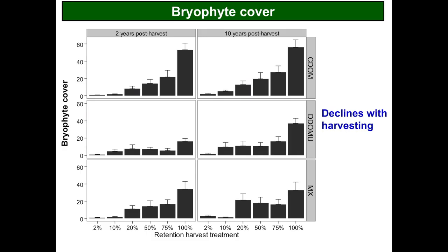Looking at the other three forest types — excluding the deciduous dominated — at two years and ten years post-harvest, we see something really consistent among all of them: as soon as you start removing any canopy from these forests, you get a decline in bryophyte cover. Remember, it was the opposite for vascular plants — removing the forest caused vascular plants to respond positively with the additional light. But bryophytes don't. They're either being outcompeted and shaded by the increase in vascular plants, or more likely the microclimate becomes less favorable.